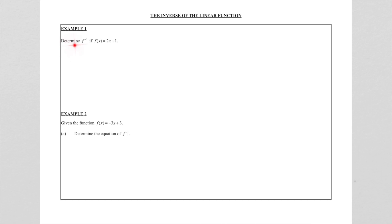Let's look at this first problem. They ask us to determine the inverse of f — this notation, f with an exponent of minus one, refers to the inverse of f. The question says: determine the inverse of f if f(x) = 2x + 1, which is a straight line graph. Whenever we find an inverse, the important thing is that we swap x and y — x becomes y and y becomes x.